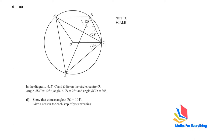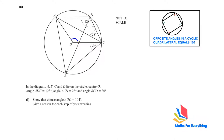Question number six is a circle theorem question. A, B, C, D lie on a circle with center O — it's a cyclic quadrilateral. We are given angle ADC, angle ACD, and angle BCO. We need to show that obtuse angle AOC = 104 degrees, giving a reason for each step.